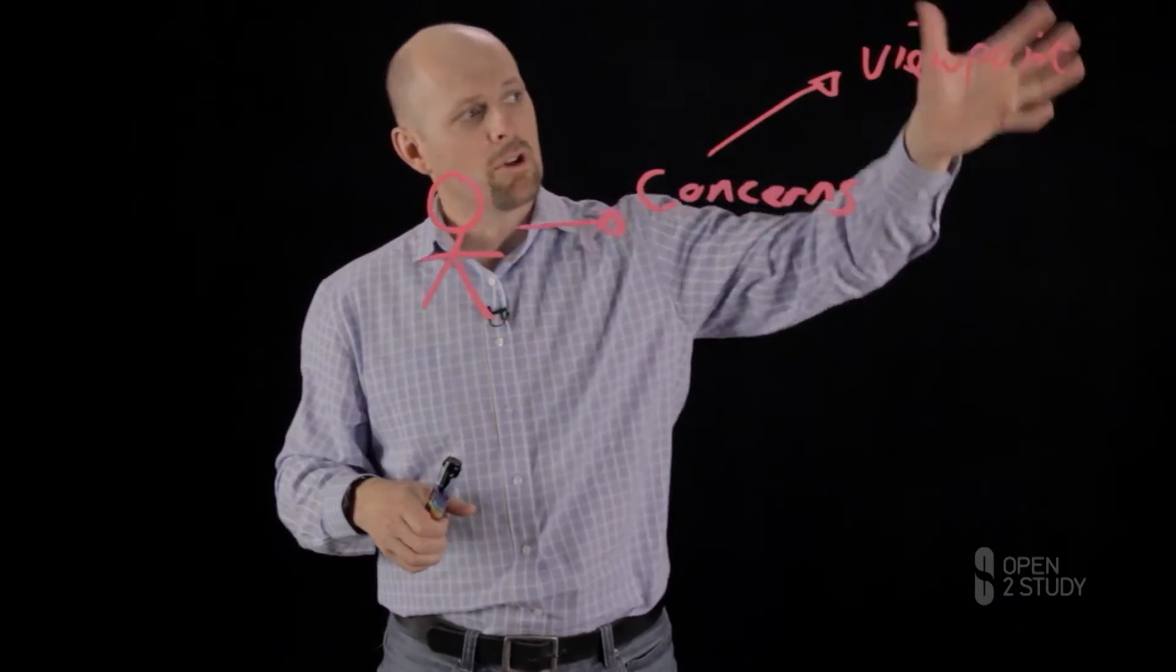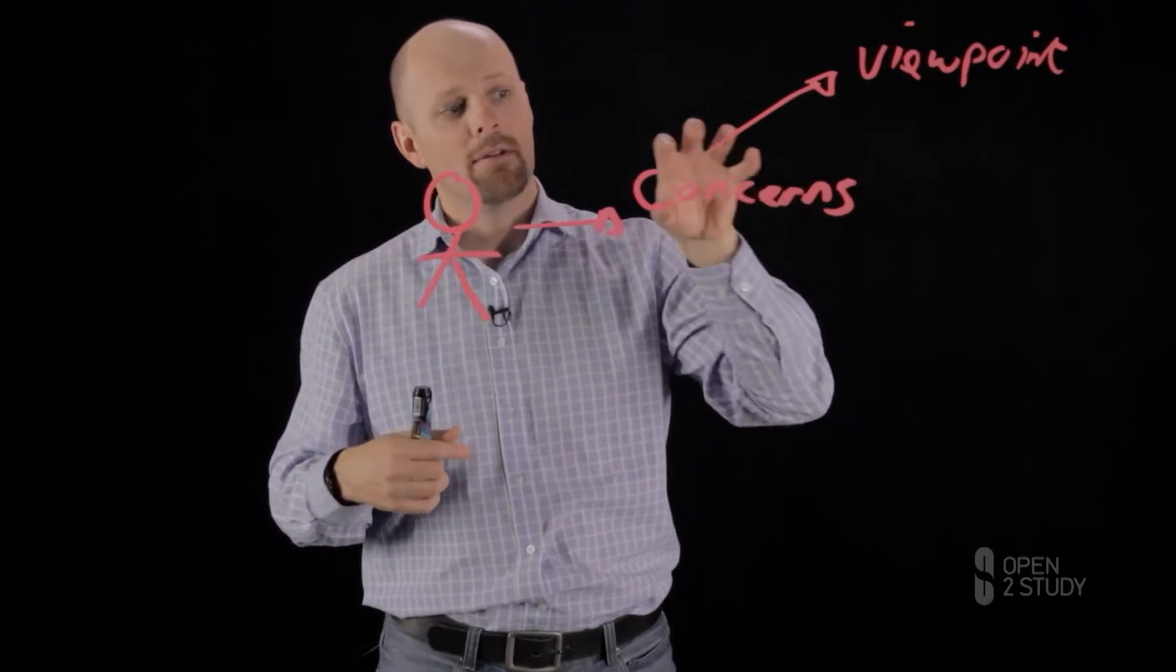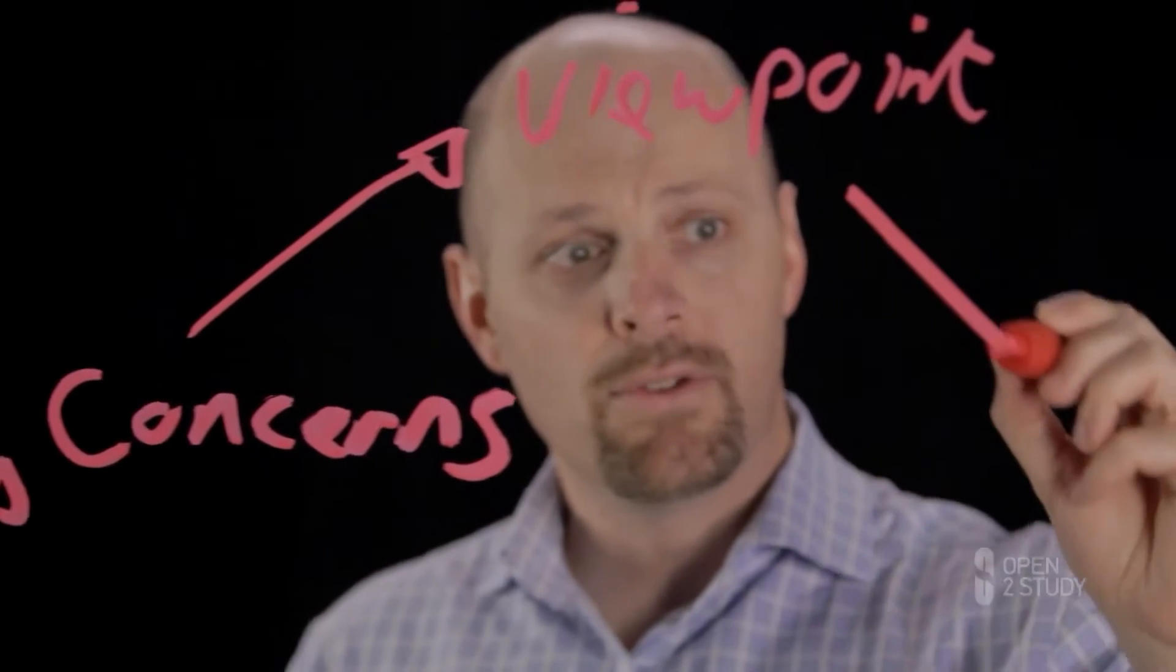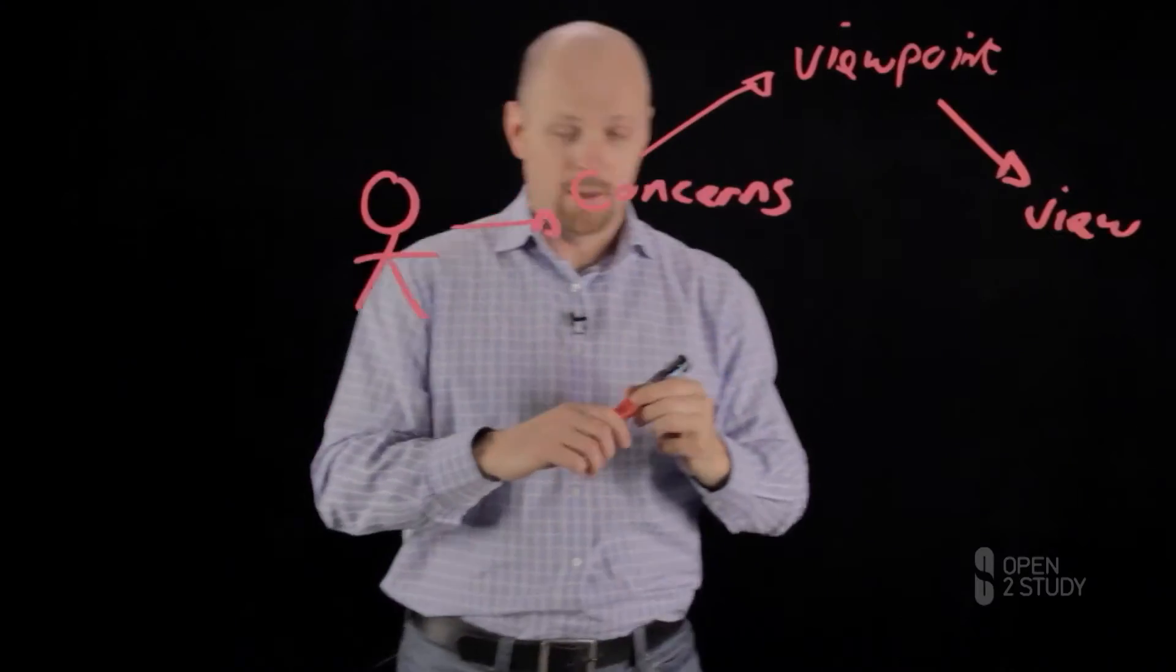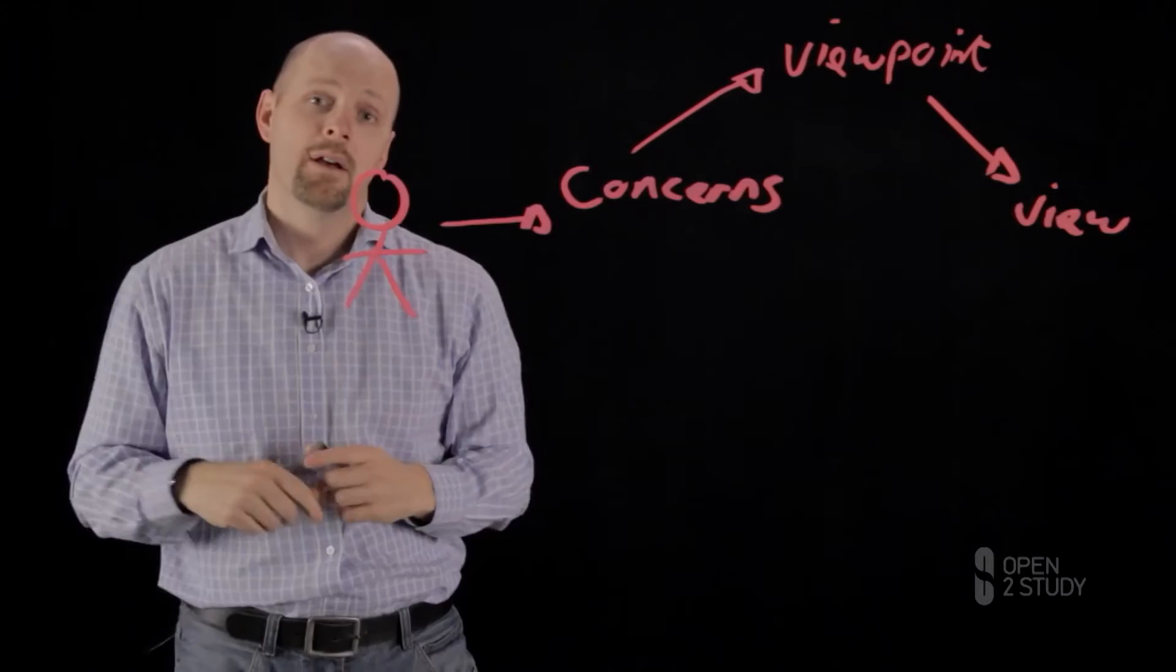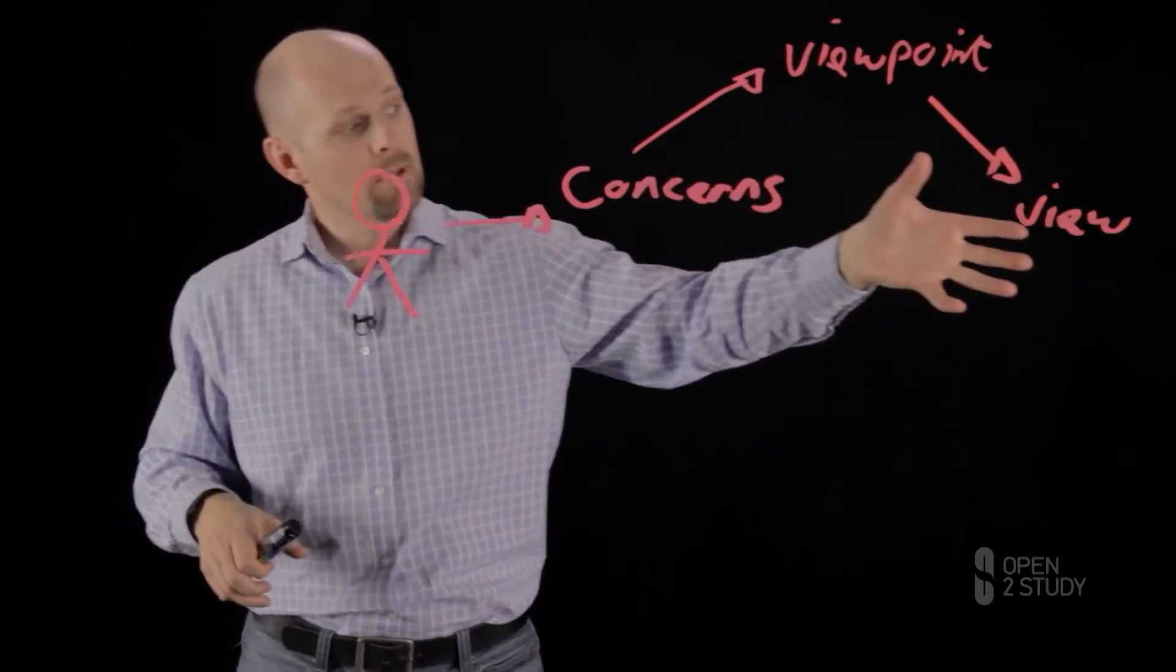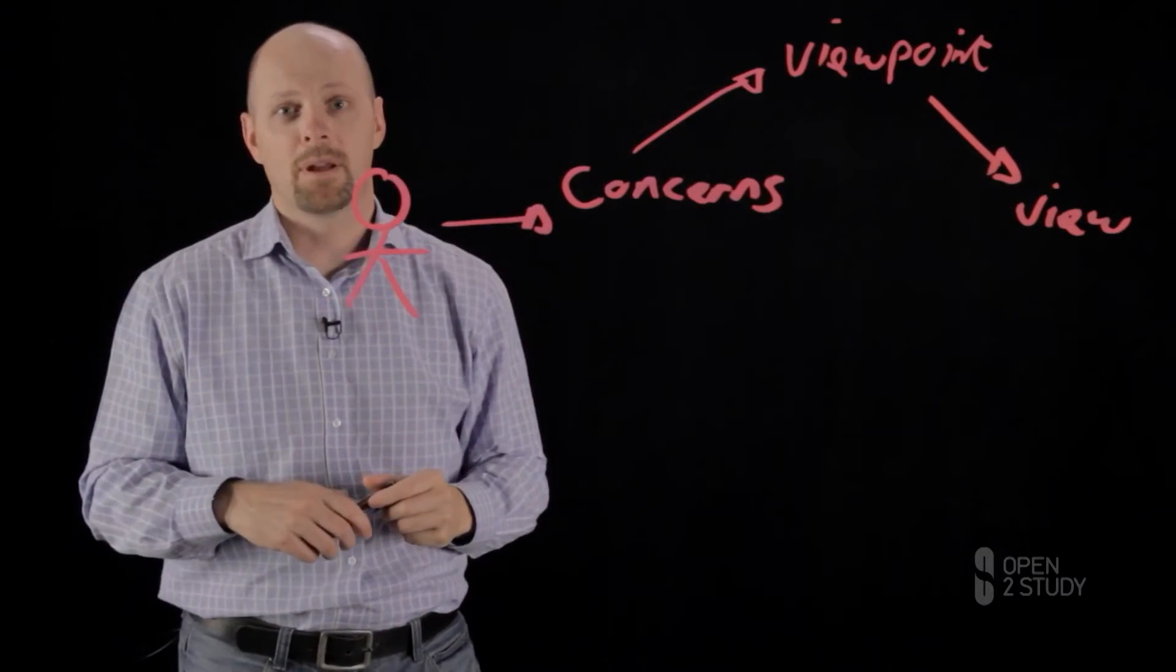And what you do is you document that in a viewpoint, which is really just an instruction set or a schema on how to create a view to address that individual's concerns. And when I refer to a view, well, that's all a view is. A view is something that I can see visually. It could be a model, it could be a picture, it could be a schematic. So I'm trying to document the right views. And in order to document a view, I need to understand how to create it. And that's my viewpoint from that perspective.